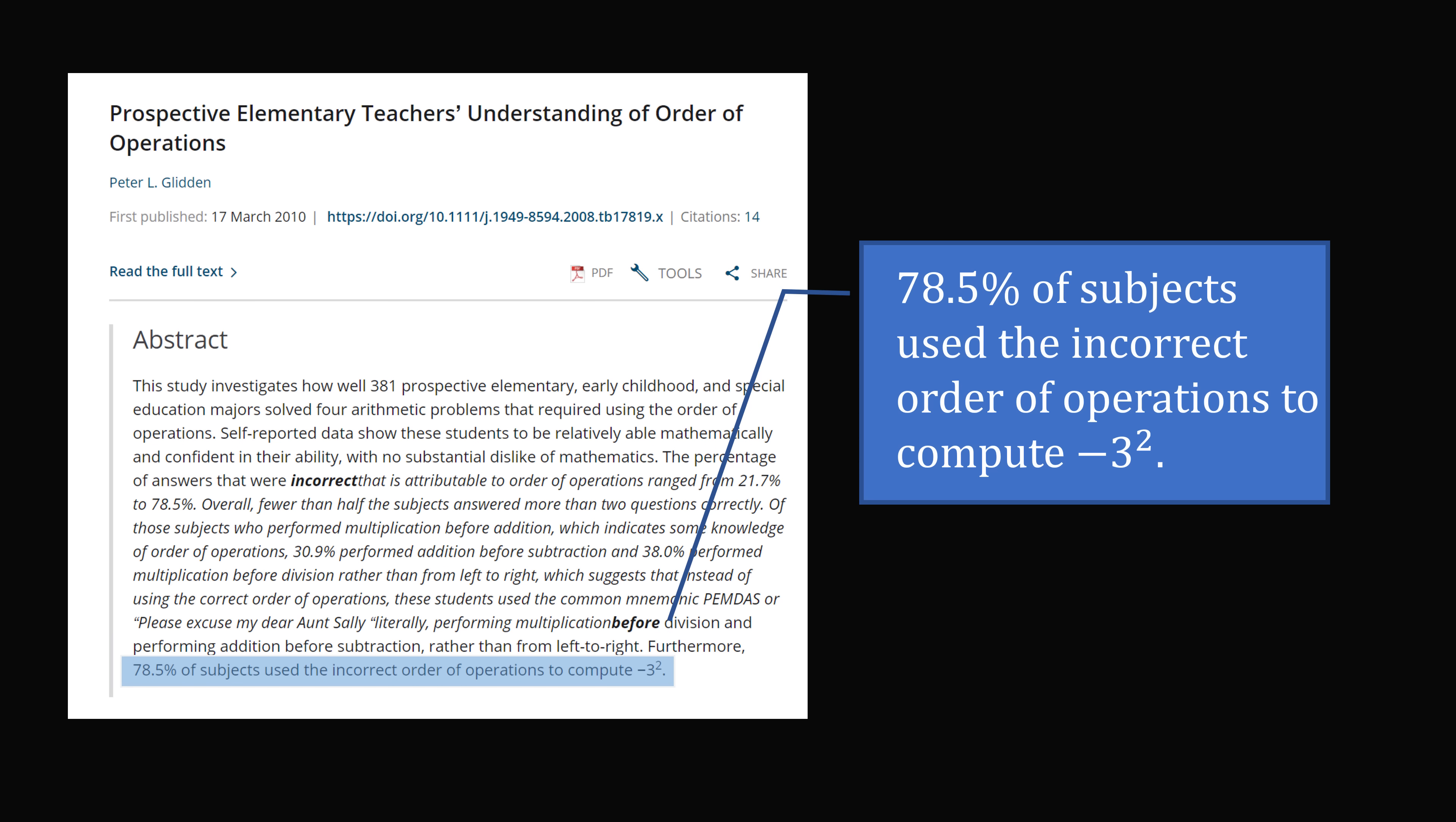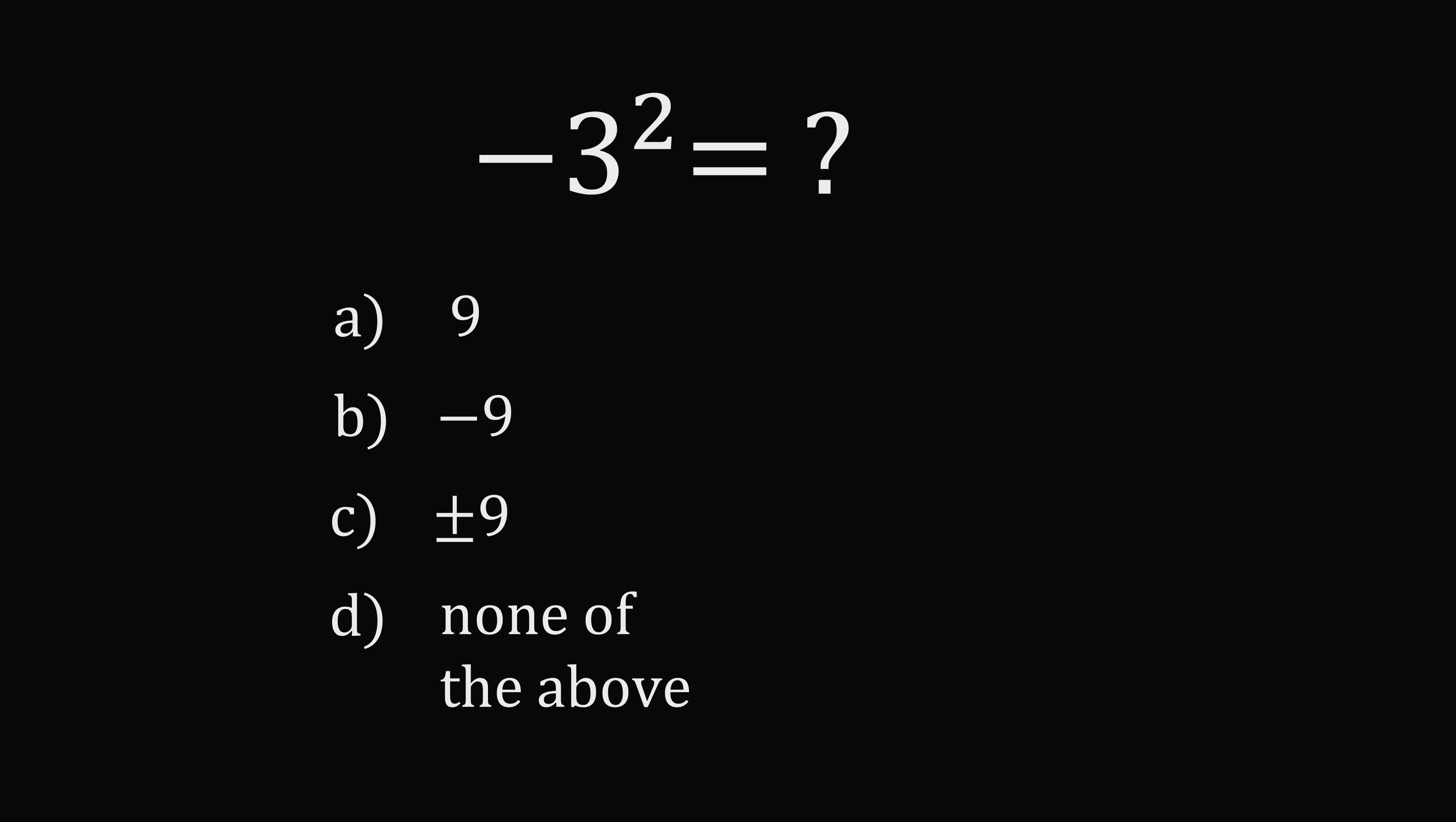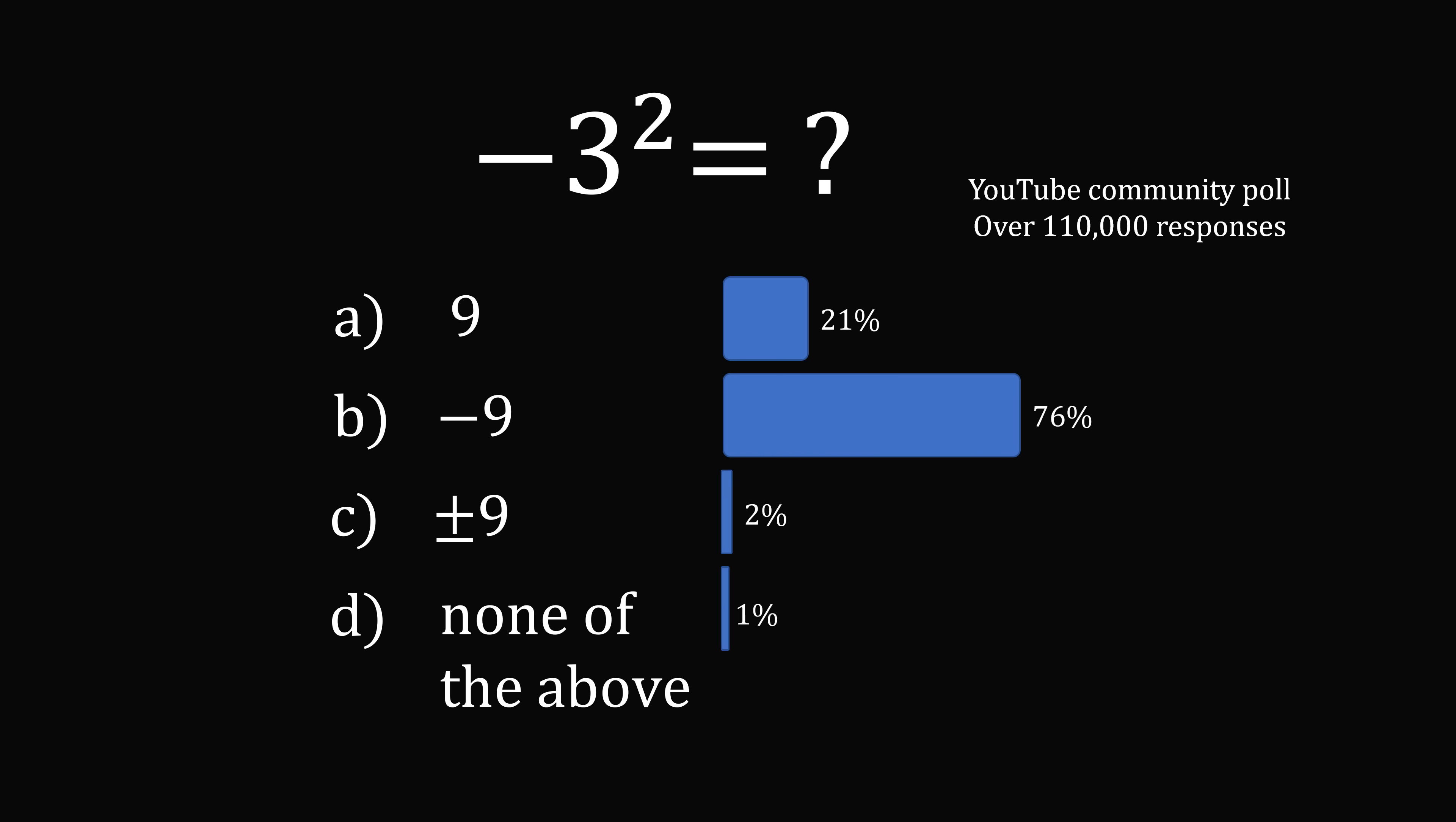So it's very important we go over the order of operations. Now for a little bit of more context, I did ask this question to my YouTube community page. The poll garnered over 110,000 responses. And I was pleasantly surprised that the overwhelming number of people, 76%, did get the correct answer of negative 9. But that does mean about 24% of people picked incorrect choices. So let's try to see why the answer is negative 9.